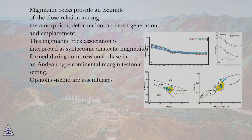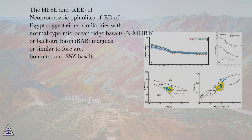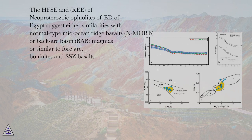Ophiolite island arc assemblages. The HFSE and REE of Neoproterozoic ophiolites of the Eastern Desert of Egypt suggest either similarities with normal-type mid-ocean ridge basalts (N-MORB), or back-arc basin (BAB) magmas, or similar to forearc boninites and SSZ basalts.